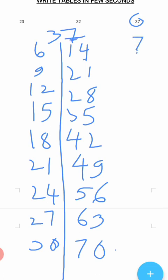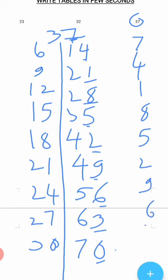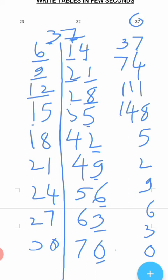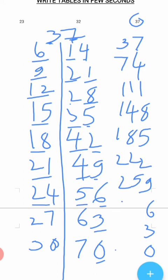All the ones-place digits from the table of 7 are: 7, 4, 1, 8, 5, 2, 9, 6, 3, 0. Then for the tens place, the tens digit of 37 is 3. Write 3, then 6, and 1 is remaining so 6 plus 1 is 7, then 9, then 9 plus 2 is 11, then 12 plus 2 is 14, 15 plus 3 is 18, 18 plus 4 is 22, 21 plus 4 is 25, 24 plus 5 is 29.